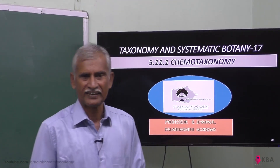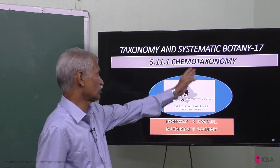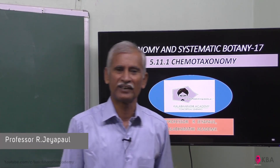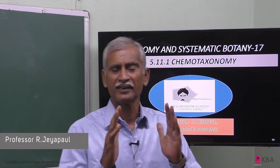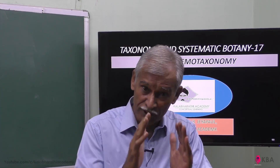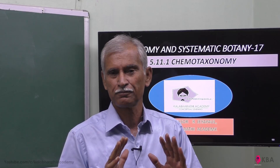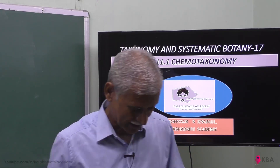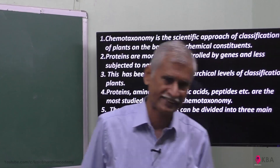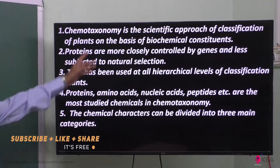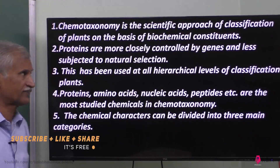In our discussion, we cover classification, taxonomy, and chemo-taxonomy. What is chemo-taxonomy? Plants are classified based on their chemical constituents — that is called chemo-taxonomy. This is a method of classification. Chemo-taxonomy is the scientific approach of classification.